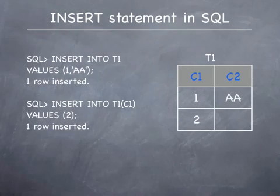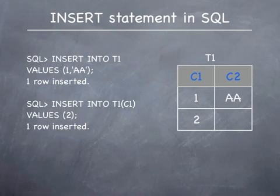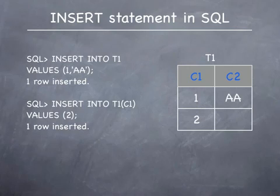We'll first review the INSERT statement. On this slide is a table called T1. The table has two columns, C1 and C2. C1 is a numeric column and C2 is a character column. There are two examples showing how the first two rows of the table are populated using SQL commands. The first INSERT statement, INSERT INTO T1 VALUES (1, 'AA'), passes values for every column explicitly. The second INSERT INTO T1 for column C1, VALUES (2), inserts a row by passing a value only for column C1. The column C2 will automatically take a null value.